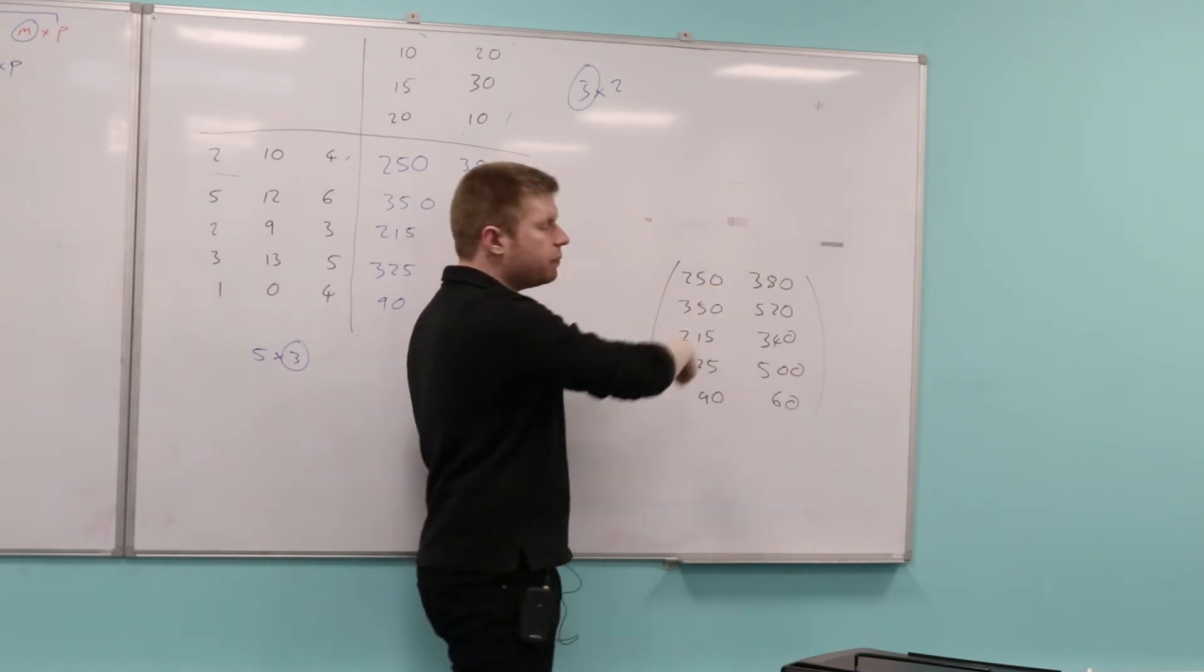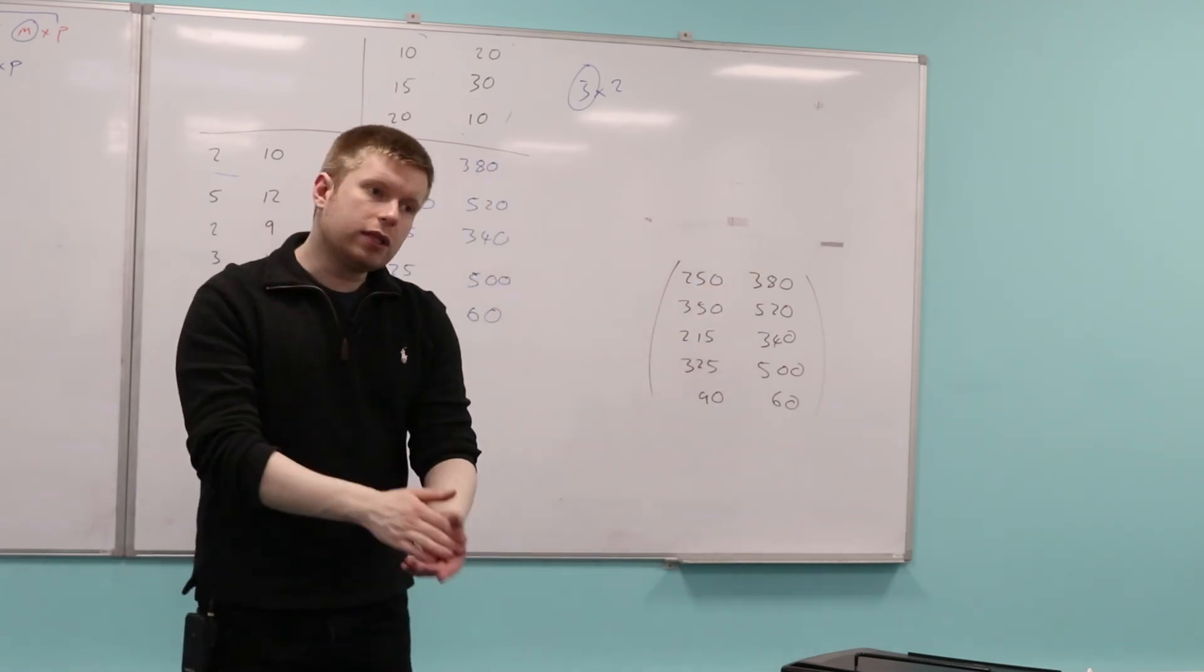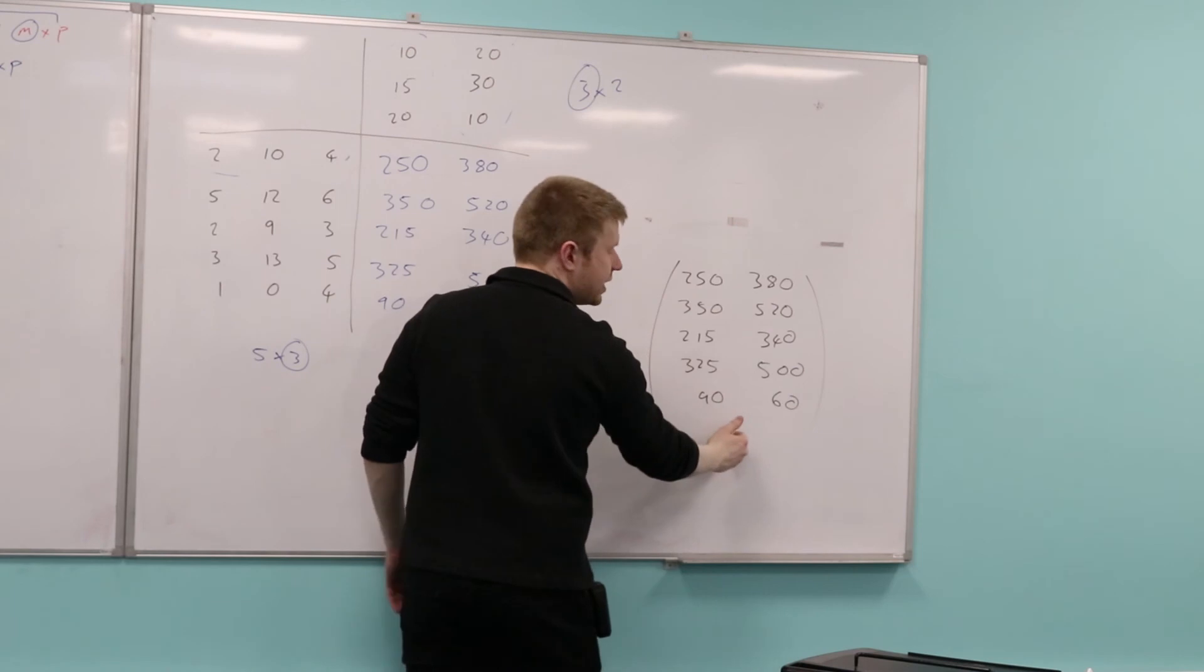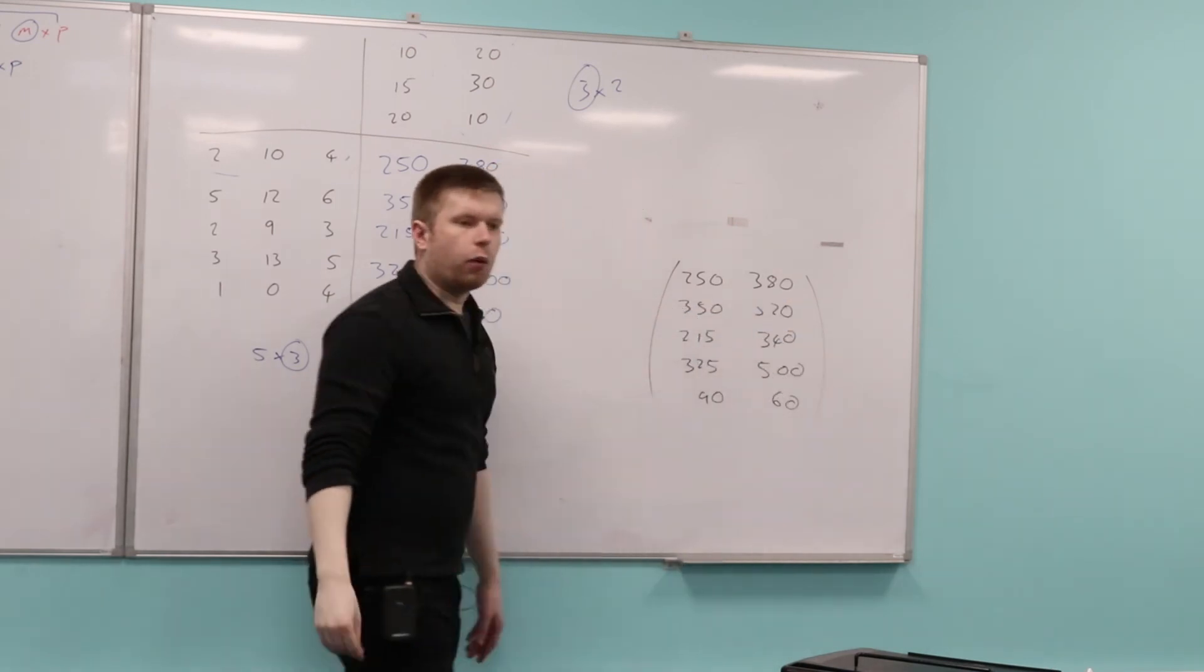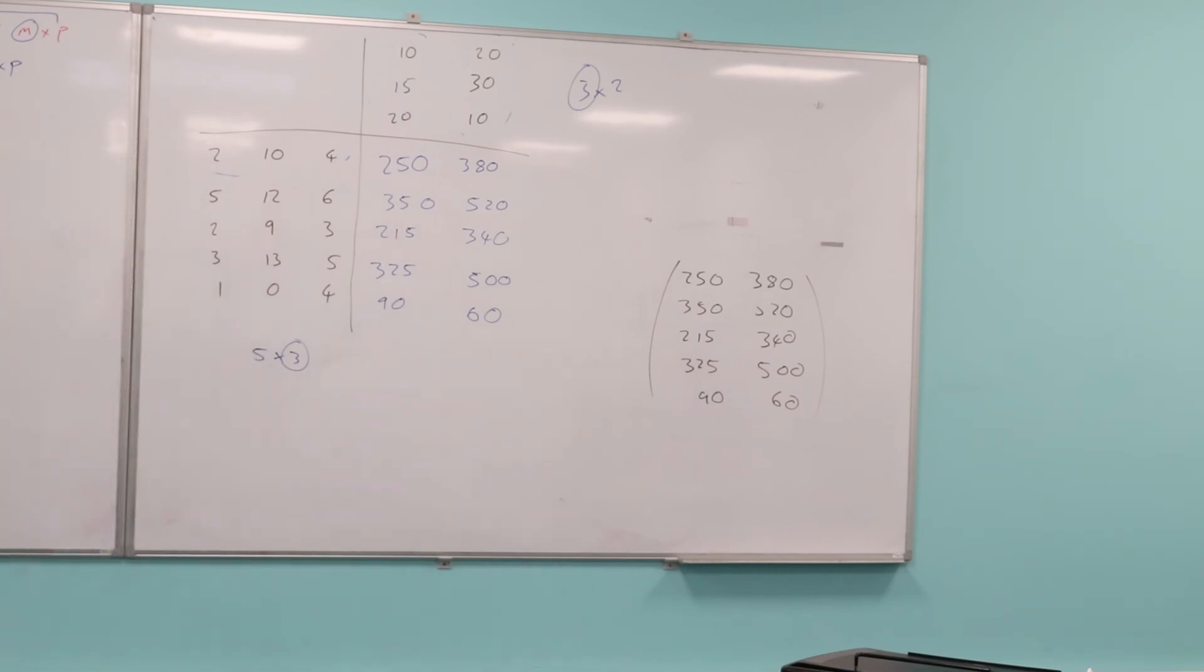Yeah, so the elements are the numbers inside the matrix. You notice that each element we separate with a nice space. And again, every time we start a new row, we separate that with a space as well. So there's no commas or anything going on with matrices. Are there any questions about that?